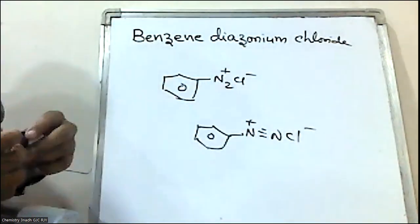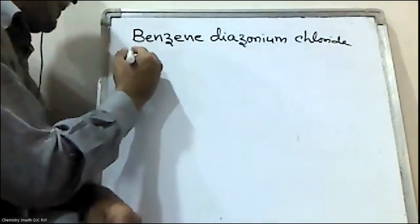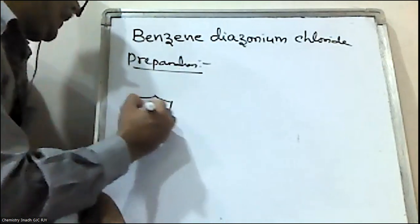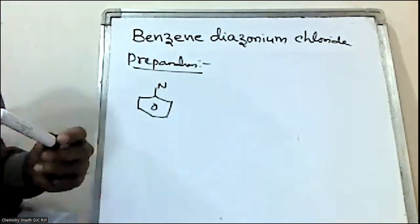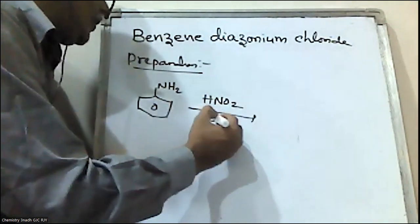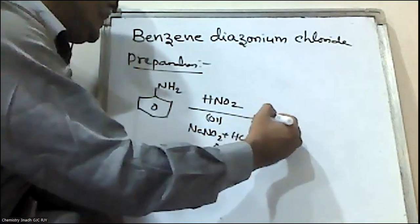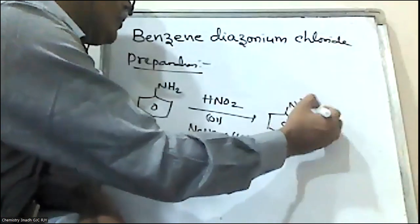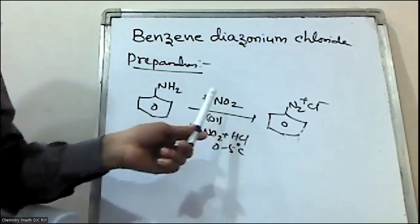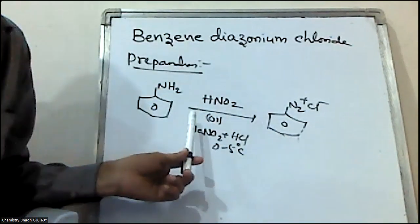So, this is called benzene diazonium chloride. How is benzene diazonium chloride prepared? It is prepared by the reaction of aniline. When aniline is treated with nitrous acid — or sodium nitrite plus HCl — at 0 to 5 degrees centigrade, benzene diazonium chloride is formed.